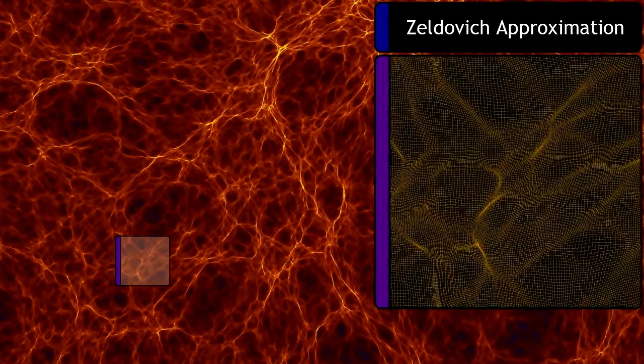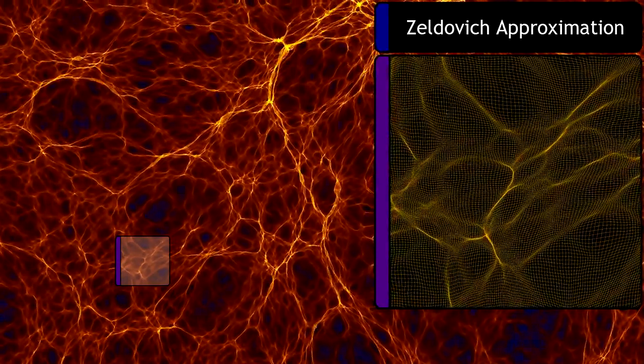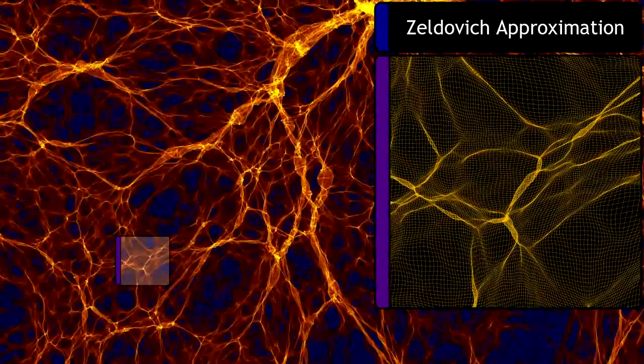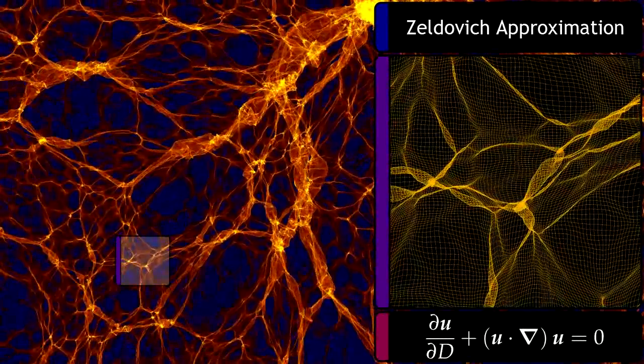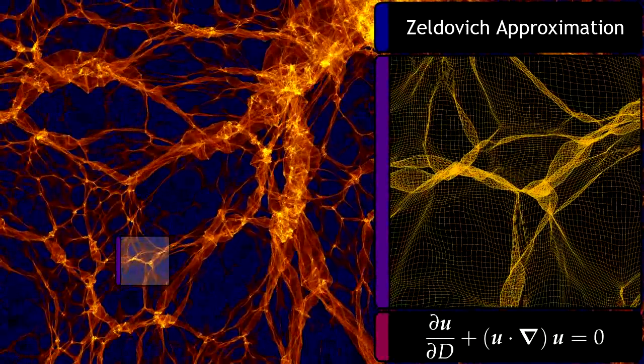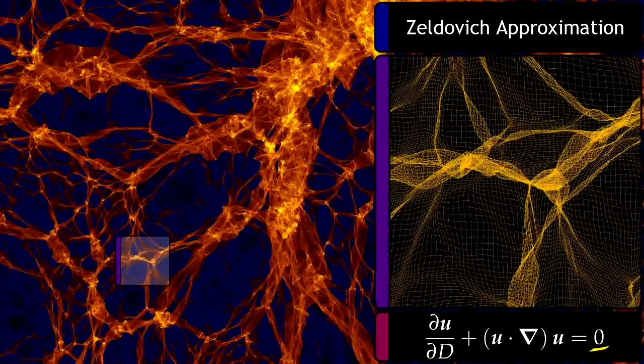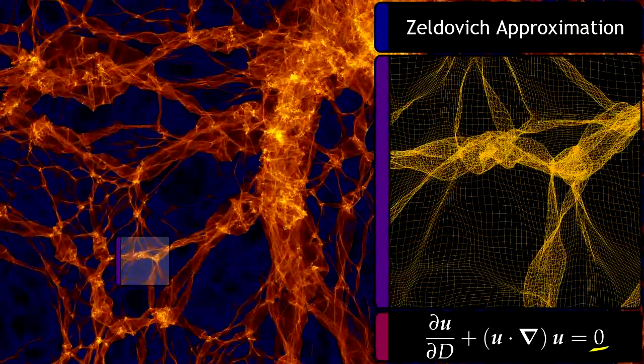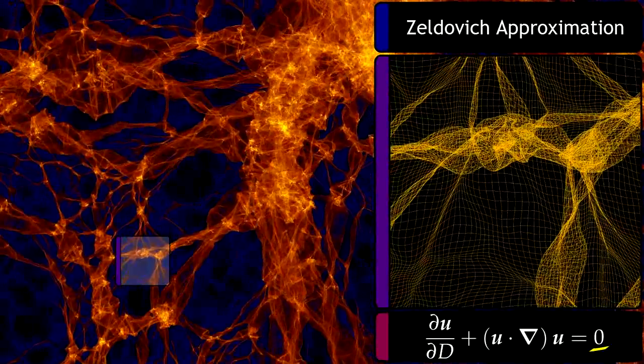The physical meaning of the Zeldovich approximation is clearer when turning to the corresponding equation of motion, i.e., the Euler equation. The fact that the Euler equation lacks a gravitational source term directly hints at its limitation. The lack of self-gravity means that the emerging sheets and filaments are unable to stop the inflowing mass elements.